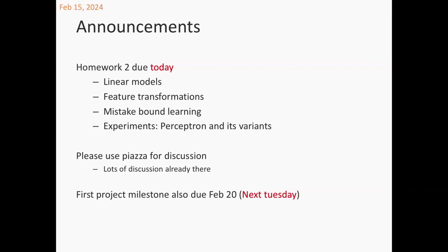A question on Zoom: are train, dev, and test sets used in real life models? It's almost a standard workflow. Anytime you have a task you set up an evaluation set — the test set is the exam for your models, so you're not going to be looking at it. There's a development set used for hyperparameter selection rather than doing cross-validation all the time. This split of data into train, dev, and test is a very standard practice for experimental machine learning.